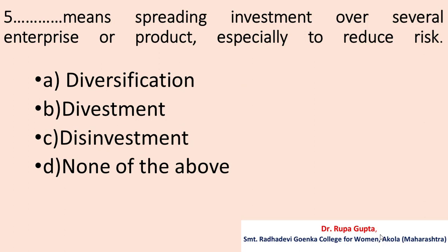Question number five: 'Dash' means spreading investment over several enterprises or products, especially to reduce risk. Options: A. Diversification. B. Divestment. C. Disinvestment. D. None of the above. The correct answer is A, i.e., diversification.